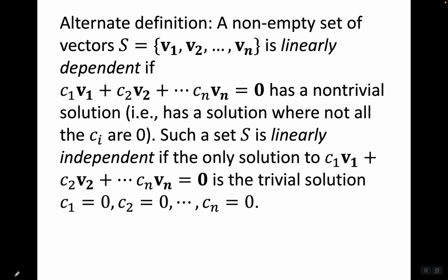In other words, it has a solution where not all the c_i are zero. Such a set is linearly independent if the only solution to c1·v1 + c2·v2 + ... + c_n·v_n = 0 is the trivial solution: c1 = 0, c2 = 0, ..., c_n = 0. In other words, it's linearly independent if the only way this is possible is if all the c_i are zero.